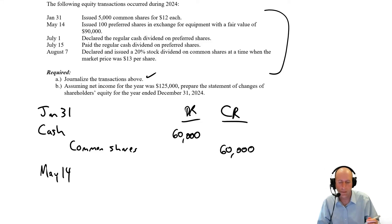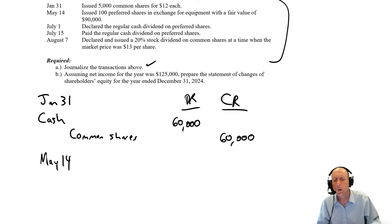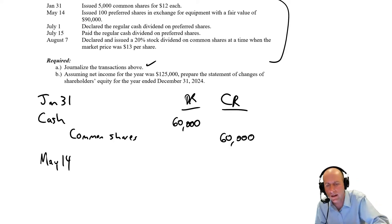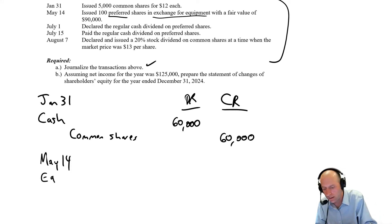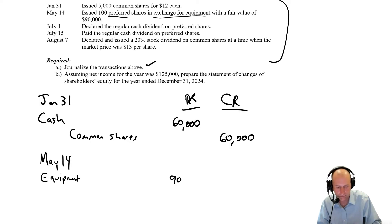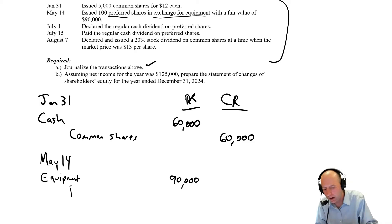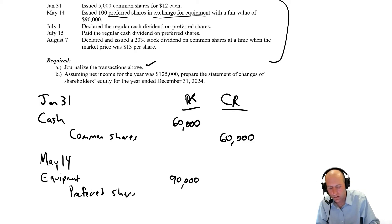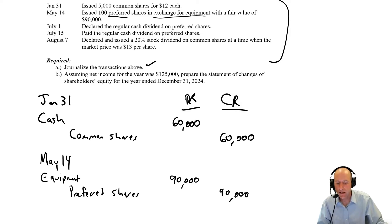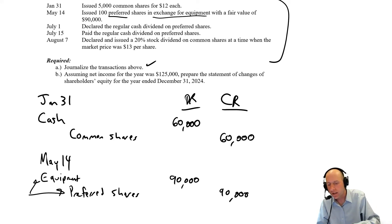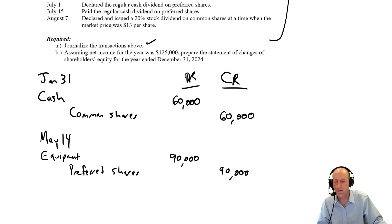May 14th gets a little more unusual. We issue 100 preferred shares in exchange for equipment — not cash — with a fair value of $90,000. So we debit equipment $90,000 and credit preferred shares $90,000. This illustrates that when you issue shares, it's usually for cash, but it can also be for other assets. The dollar value of the asset exchanged is what matters.